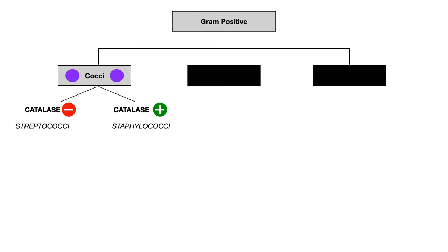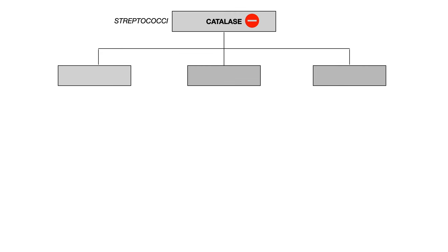I want you to imagine that we're zooming in on this section, which you see here with that fuzzy orange line. We're talking about gram-positive cocci, but specifically catalase negative gram-positive cocci, and that pushes us in the direction of talking about all the different strep organisms. If you follow that orange fuzzy line, we're talking about gram-positive cocci that are catalase negative, and therefore we're only talking about the different types of streptococcal organisms.